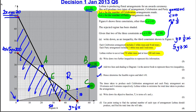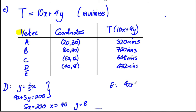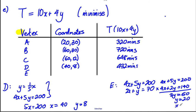Vertex E is where 2x + y = 70 intersects 4x + 5y = 200. Multiply the first equation by 2: 4x + 2y = 140. Subtract from 4x + 5y = 200: 3y = 60, so y = 20. Substituting back: 2x + 20 = 70, giving x = 25. So E = (25, 20) and T = 10(25) + 4(20) = 330 minutes.